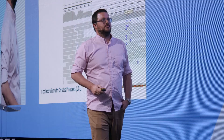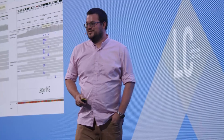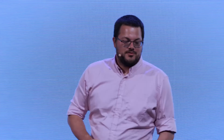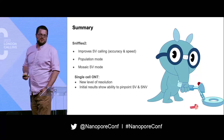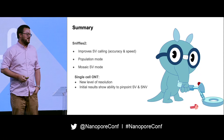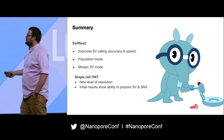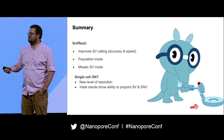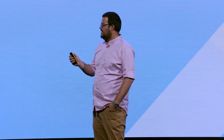To summarize: today I talked about Sniffles 2 - it improves structural variant calling in accuracy and speed, provides a population mode that hopefully solves many workflow problems, and has a mosaic SV mode that should lead to new insights into brains, cancer, and other important topics. I also teased what we're starting to look at: single-cell whole genome sequencing with Oxford Nanopore, detecting structural variants the same way as we are used to with bulk sequencing data.